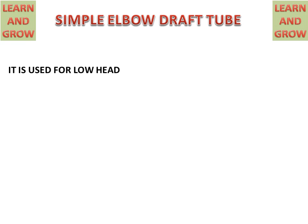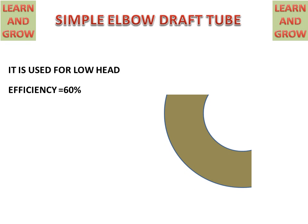Simple elbow draft tube. This is used for low head and its efficiency is about 60%. It looks like a simple elbow with no change in the area of the elbow. The inlet will be from the upper side and water will go out from the lower side. This is the simple elbow draft tube.